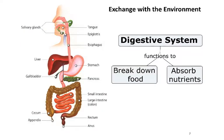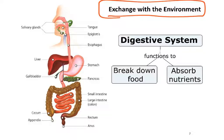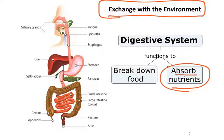Next we're going to move to talking about exchange with the environment. The digestive system digests — to digest literally means to break down. We're breaking down the food that we eat into nutrients, which we are then able to absorb. Interestingly, what you put in your mouth and what comes out your anus never technically touches the inside of your body — it never crosses that boundary. Nutrients do, water does, but the actual food does not.